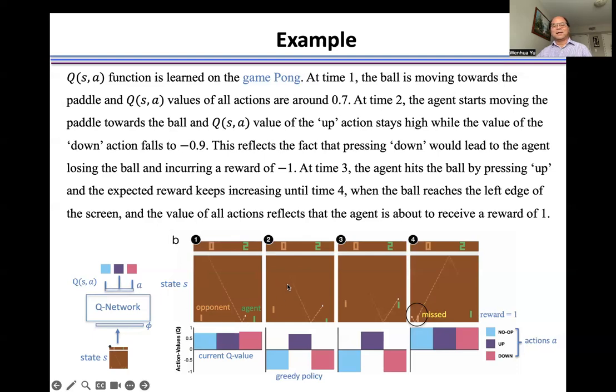That means, for example, at this state S, the ball is coming in this direction or bounced by this wall, or that means we need to take action up. That means at this state, action up will have a higher Q value. So this is a greedy policy, that means we need to take action up.